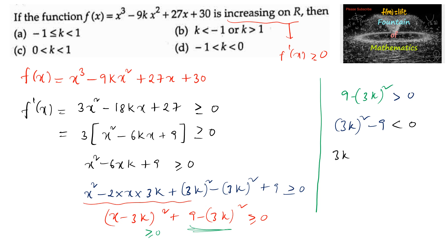This can be written as 9k² - 9 < 0. Taking 9 common: 9(k² - 1) < 0. Since 9 is positive, k² - 1 < 0, so (k + 1)(k - 1) < 0.